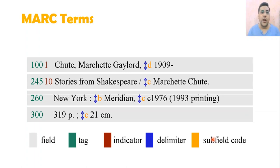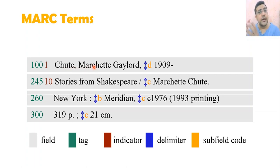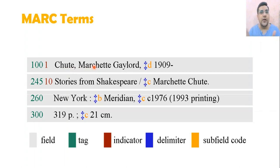Whatever information we write within the tag numbers is according to a cataloging code — it could be RDA or AACR2. Whatever cataloging code you are following, you write information according to that code.